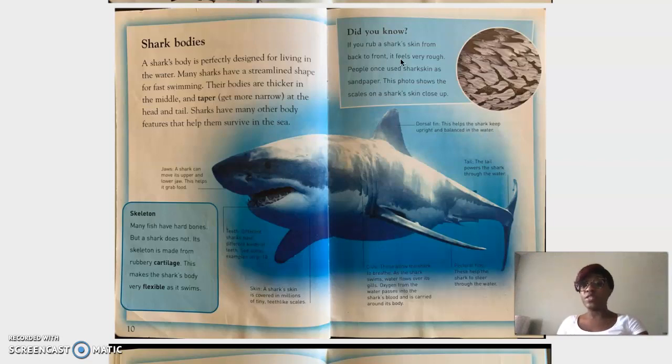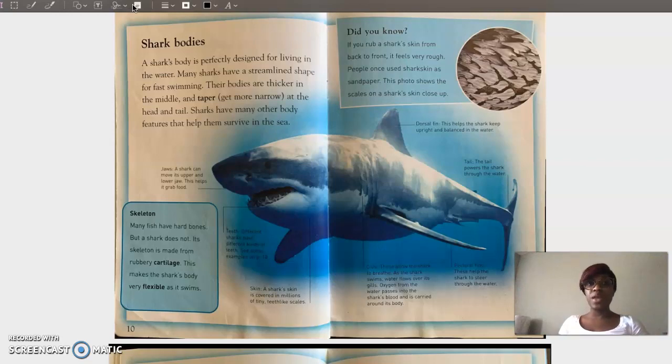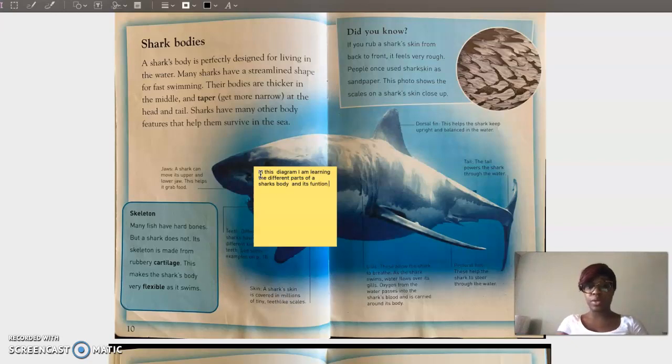So now I'm going to jot what this diagram the author has showed me helps me to learn. Okay. So I'm going to put in this diagram the different parts of a shark's body and its function. Function means how it works. Okay. I'm going to put that how it works. Okay.